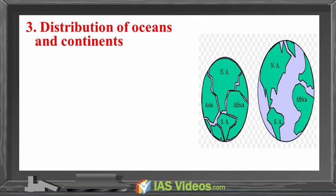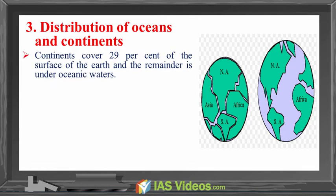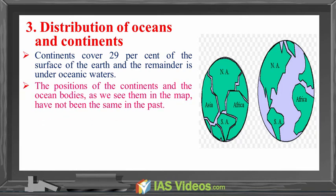Distribution of Oceans and Continents. Continents cover 29% of the surface of Earth and the remainder is under oceanic waters. The positions of the continents and the ocean bodies as we see them in the map have not been the same in the past.